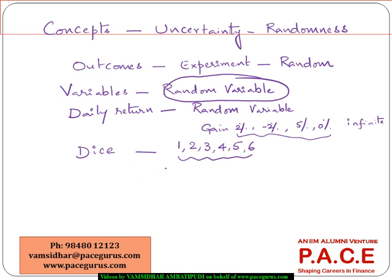Each of these random variables can have different outcomes. So 1, 2, 3, 4, 5, 6 for a dice, or 2%, minus 2% for stock returns — these are different kinds of outcomes. Whatever value a random variable can take, or what did it take on a given day — that is an outcome, what came out of the experiment. Sometimes we are more interested in looking at what is the chance of occurrence of an outcome.